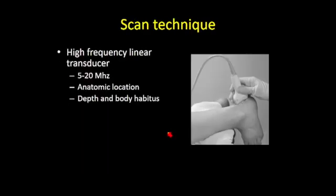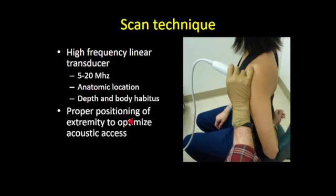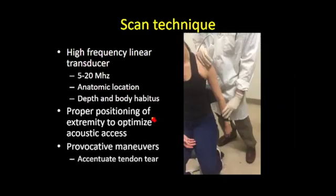How do we scan tendons? Generally, these are linear superficial structures, so we approach them similarly to other superficial structures. We use a high-frequency transducer; the exact frequency depends on anatomic location, depth, and body habitus. Proper positioning of the extremity can improve acoustic access — for example, the CRASS position in the shoulder when looking at the supraspinatus tendon.